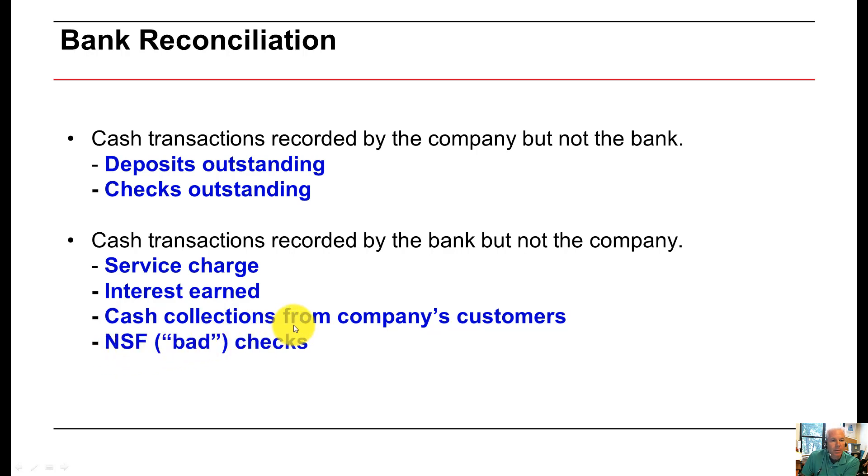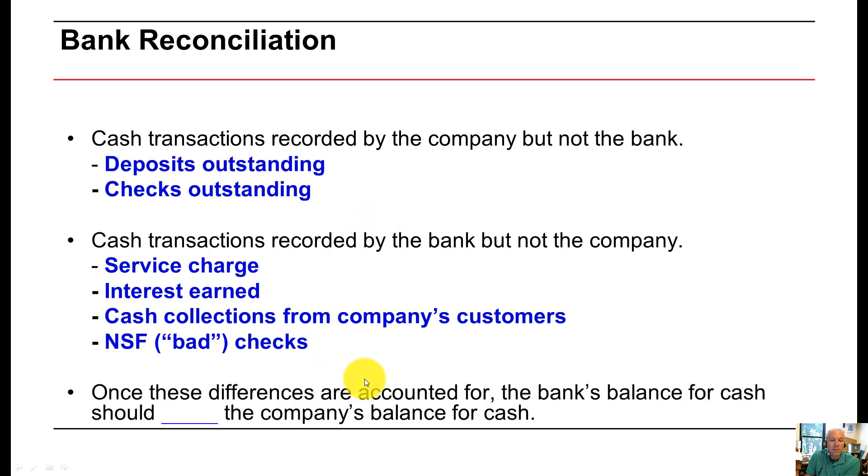I want you to kind of think of a bank reconciliation using a crude sports metaphor, it's like a boxing match. There's two corners. On the bank side corner, that represents the outstanding items. There's only two items that go into the bank side. That's your deposits outstanding and your checks outstanding. On the company side, there are at least four different types of reconciling items that are going to be needed to be accounted for. So once these differences are accounted for, the bank balance of cash should equal the company's balance for cash.